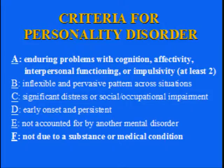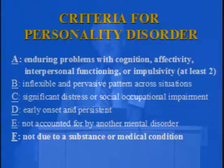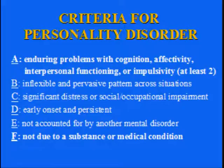Both disorders tend to be, at least their chronic versions, inflexible and pervasive across patterns or situations, cause significant distress, and have a very early onset. But the key defining characteristic, bolded as criterion F, is that a personality disorder — and this is true of borderline personality disorder — cannot be better accounted for by the presence of a substance use disorder or any other psychiatric disorder.